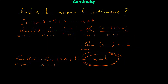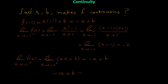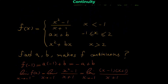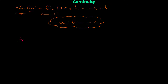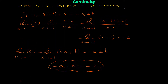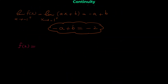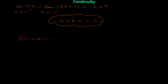So our first equation is: -a + b = -2. Now let's move to point x = 2. For f(2) we use the middle equation (since x ≤ 2 applies): f(2) = a(2) + b = 2a + b.